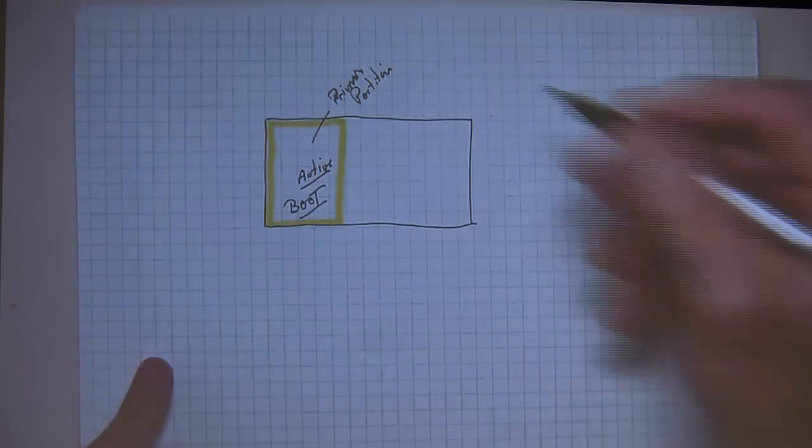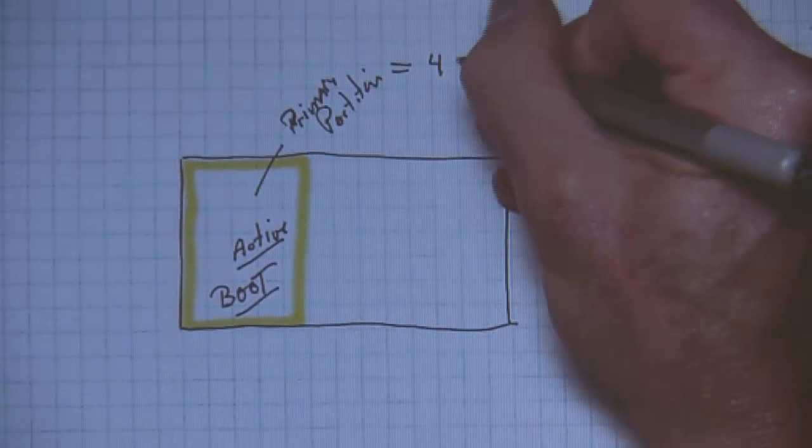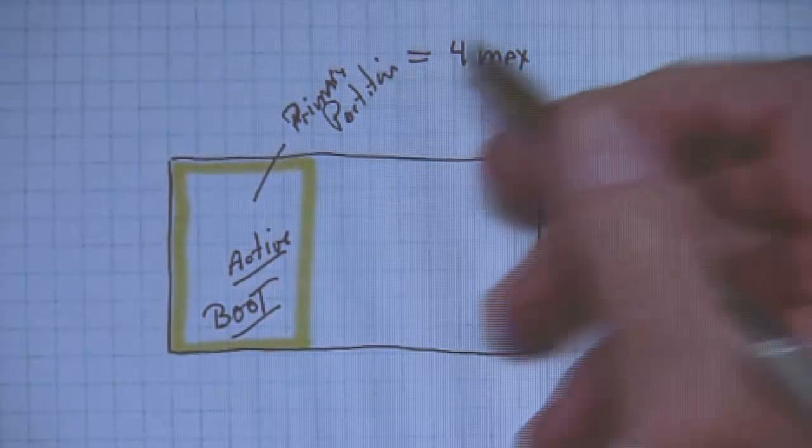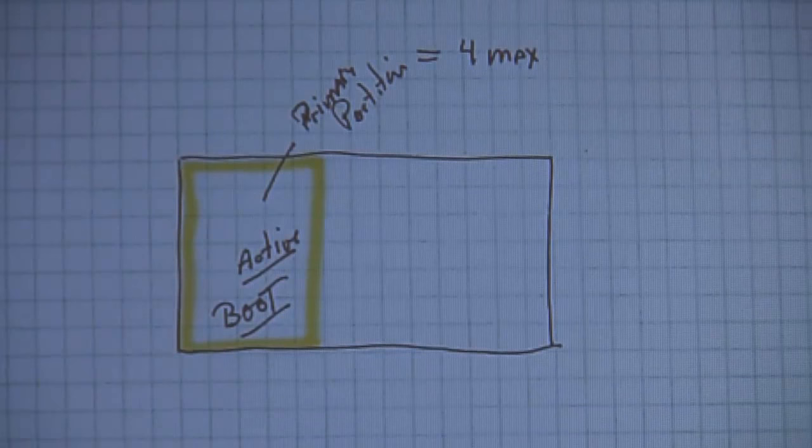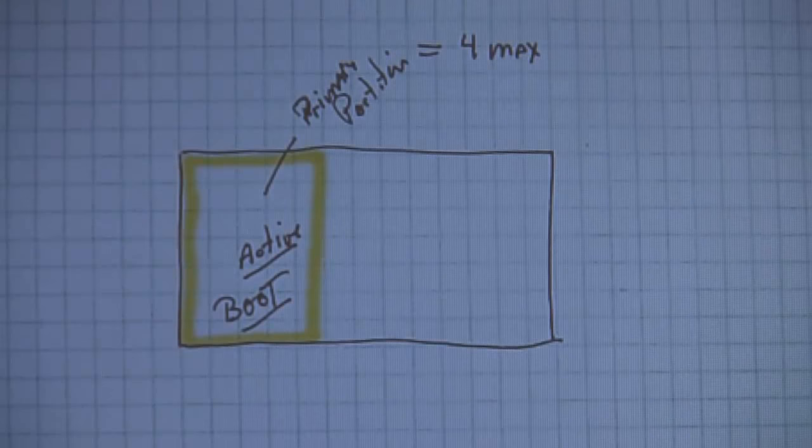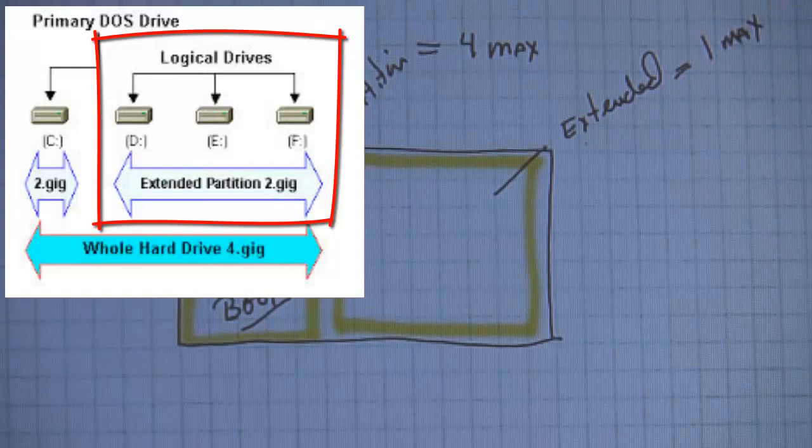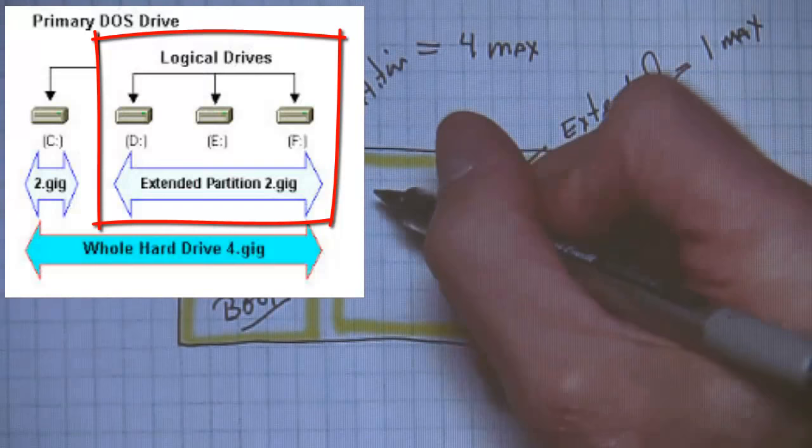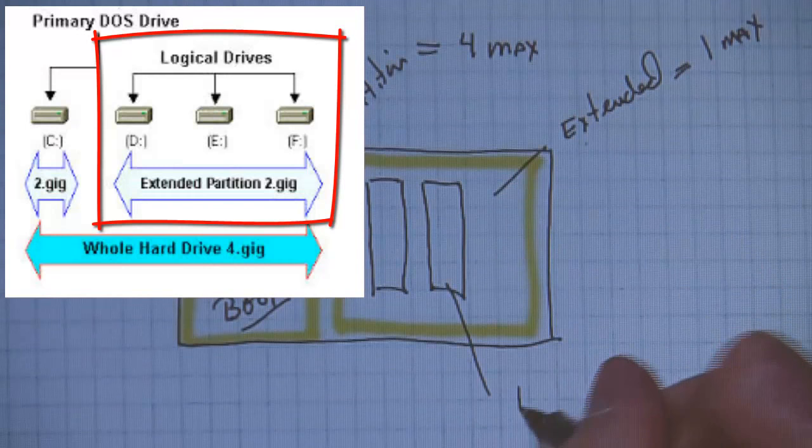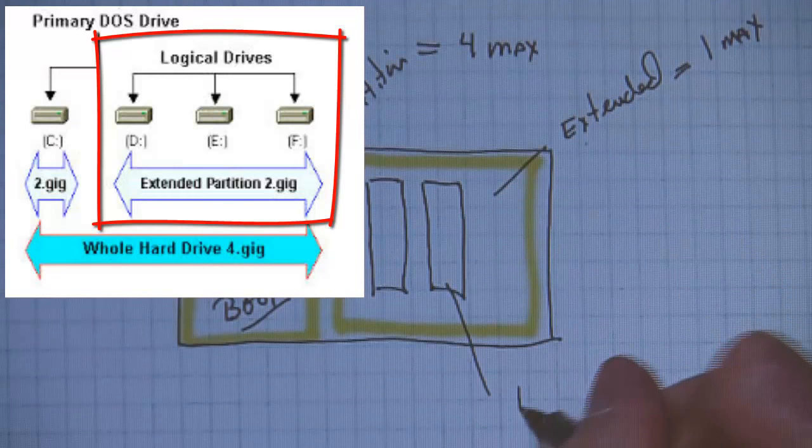You can create up to a max of 4, you can have a maximum of 4 primary partitions. Now if you so desire, and the need for this has really went away, but there was a day when we did this. You could actually create an extended partition, only one. You could only create one extended partition. And inside, you could create logical drives. They acted just like any other partition. These were logical, and they were inside an extended partition.